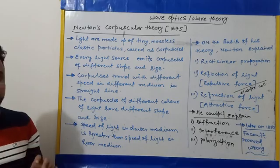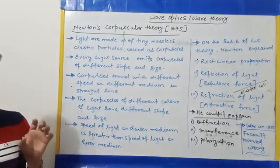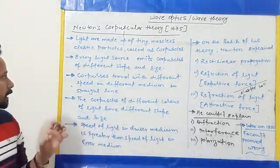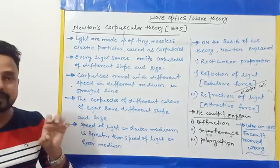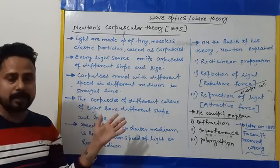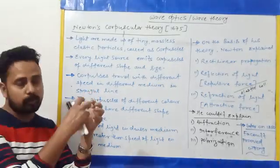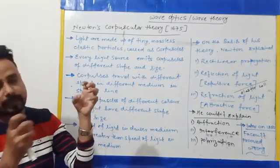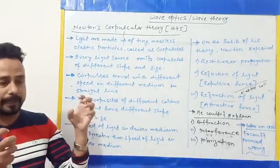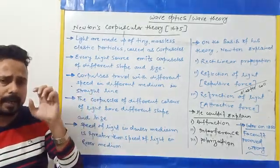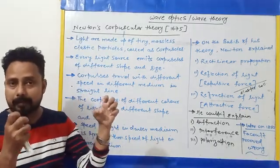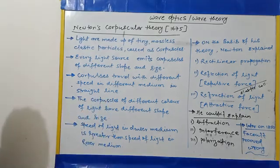Newton said light is made up of tiny small massless particles called corpuscles. When you see light spread all around from a source, that is because there are small corpuscles being emitted — meaning light is particle-like in nature, consisting of tiny particles.